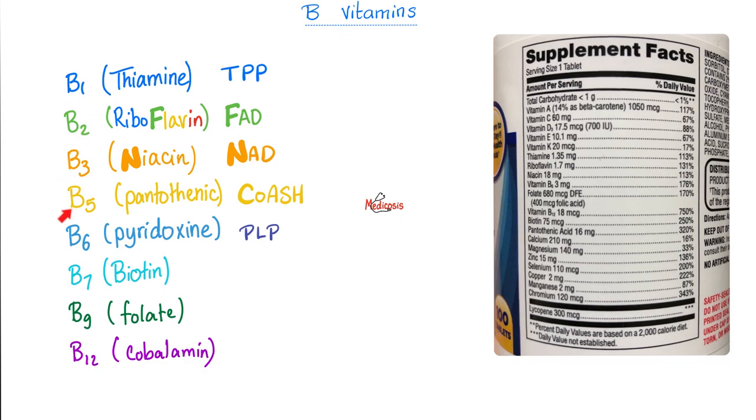These are your B vitamins, B1, B2, B3, B5, B6, B7, B9, vitamin B12. All of these are vitamin B, which means all of these are water-soluble. Since these are vitamins, they are coenzymes. I know that the word cofactor and coenzyme are used interchangeably, but if you want to get technical, vitamins are coenzymes. They are very important for chemical reactions, as we will discuss later when we talk about metabolism.